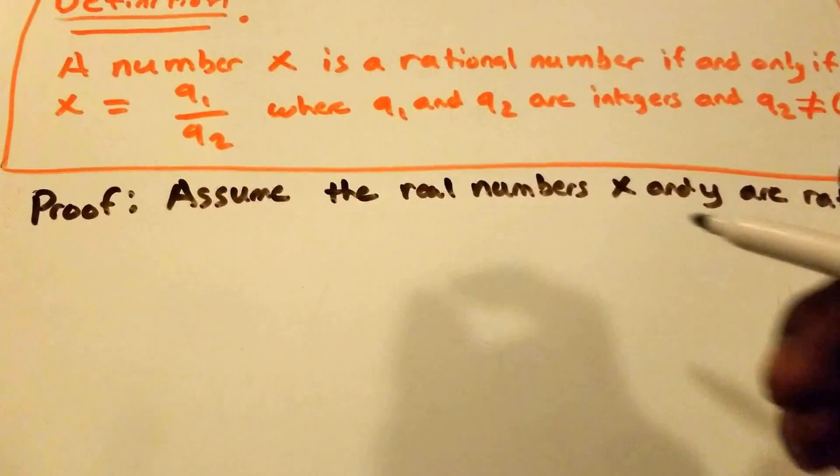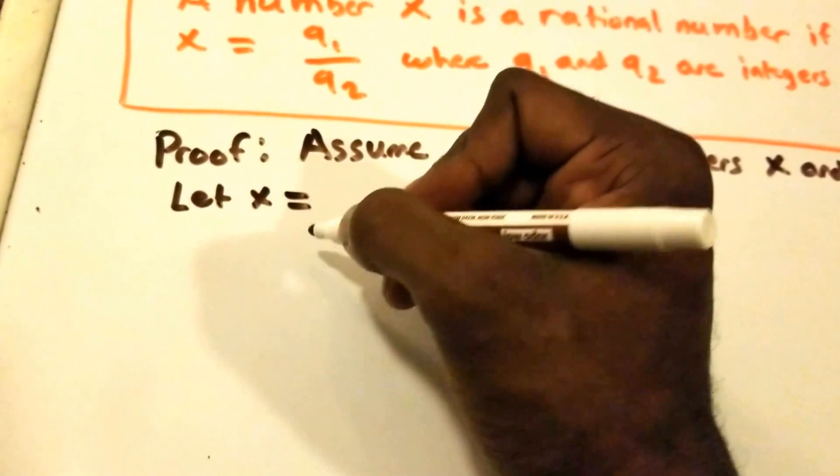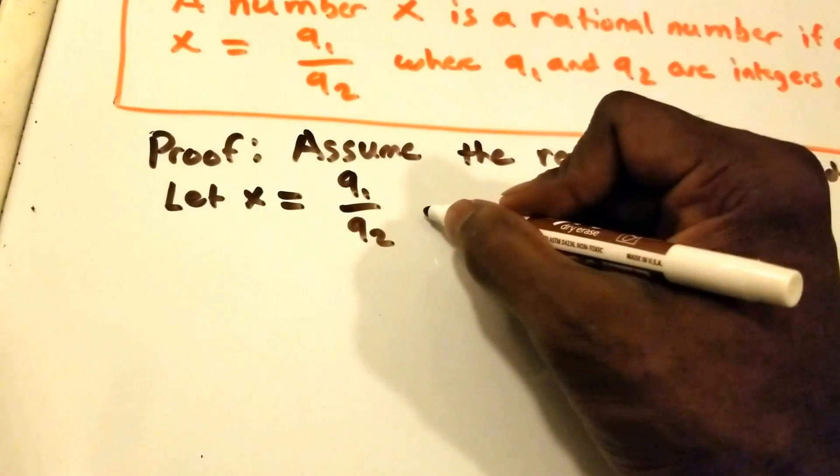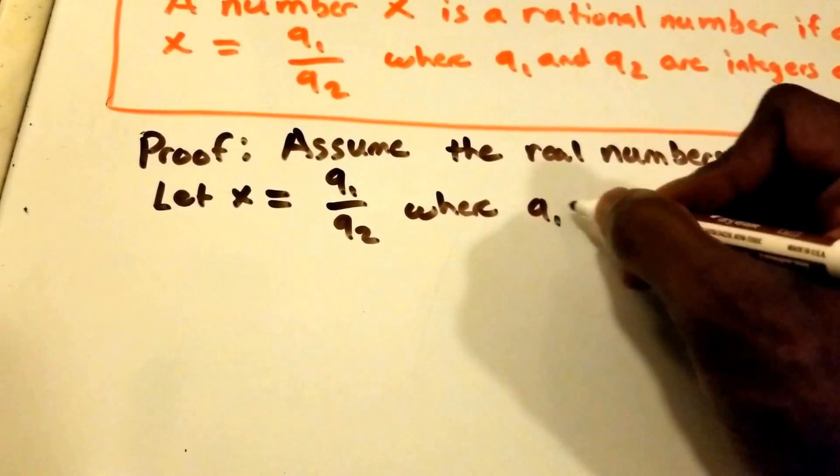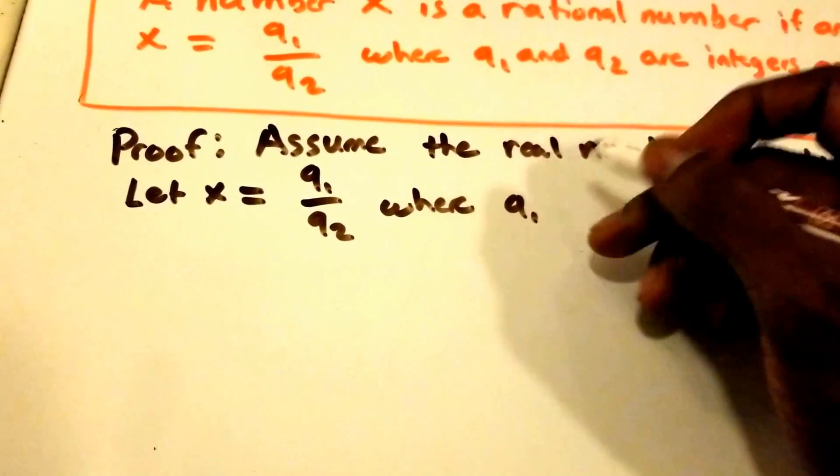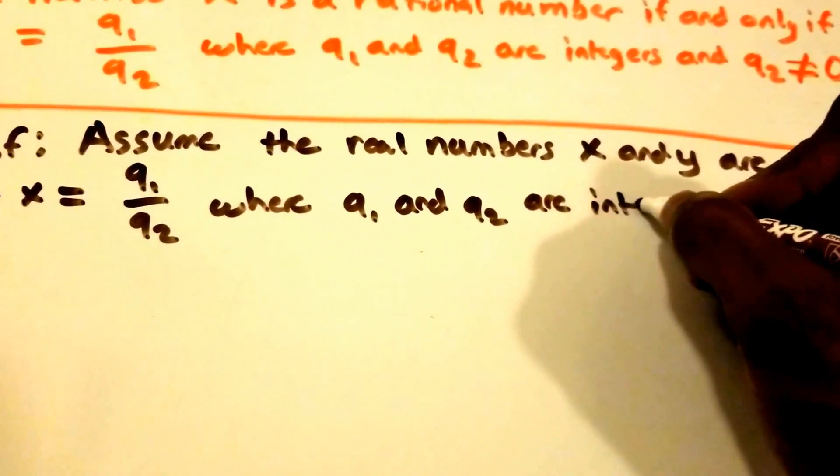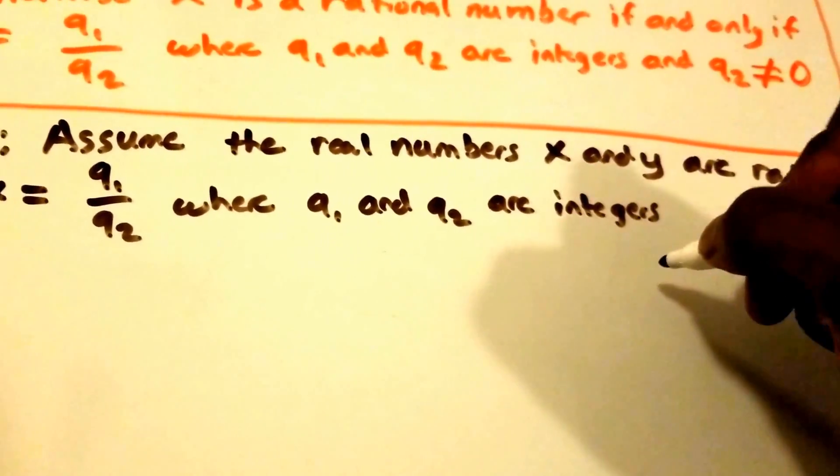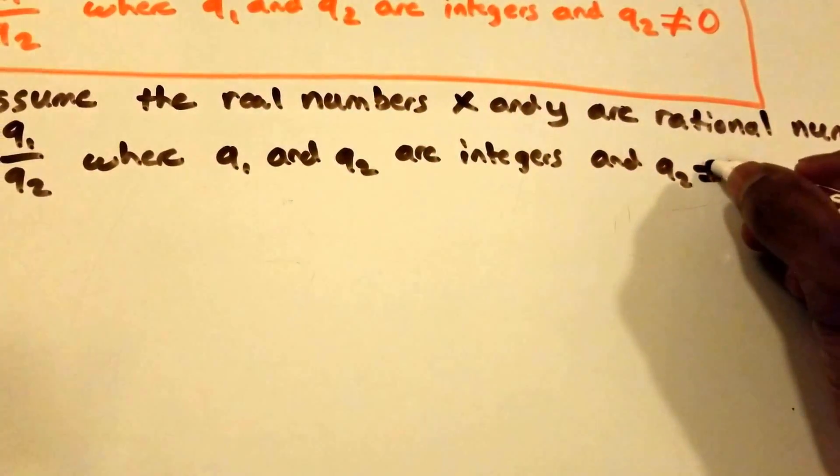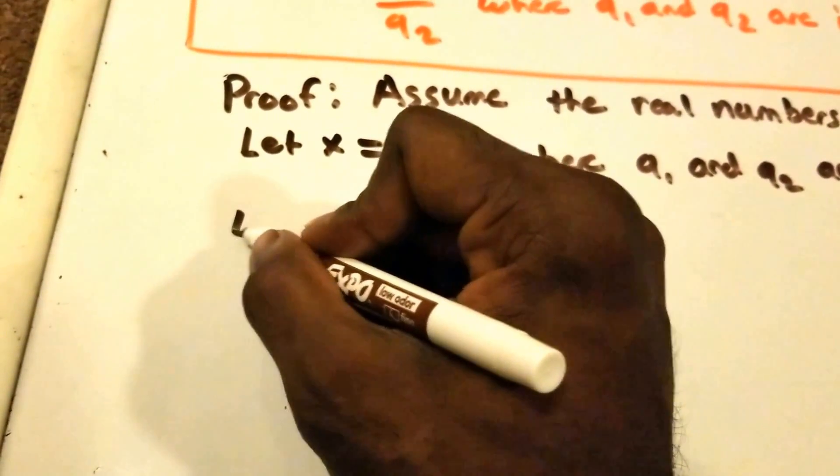So we're going to let x equal q1 divided by q2, where q1 and q2 are integers and q2 does not equal 0. We can't divide by 0.